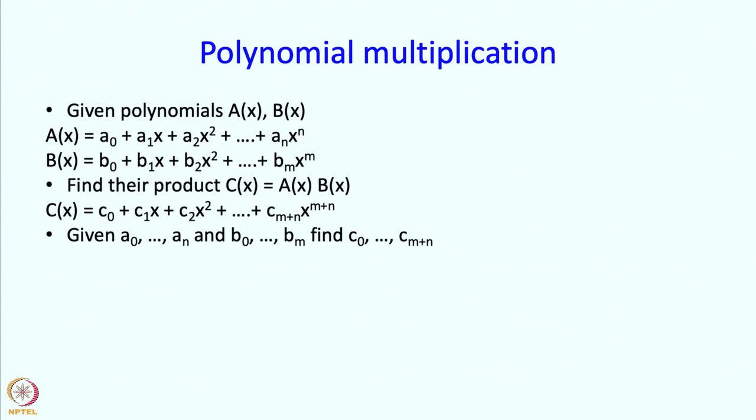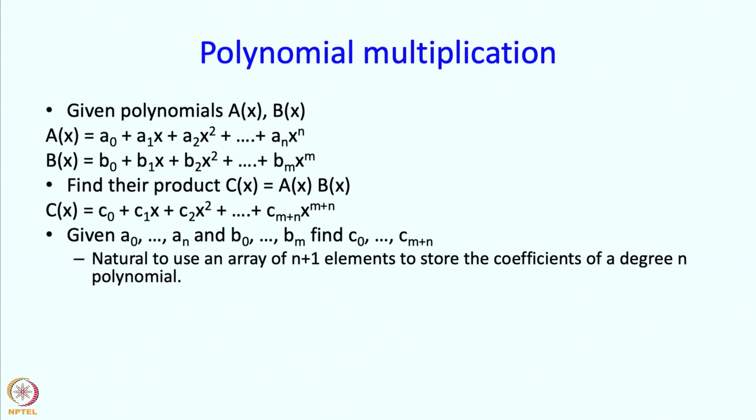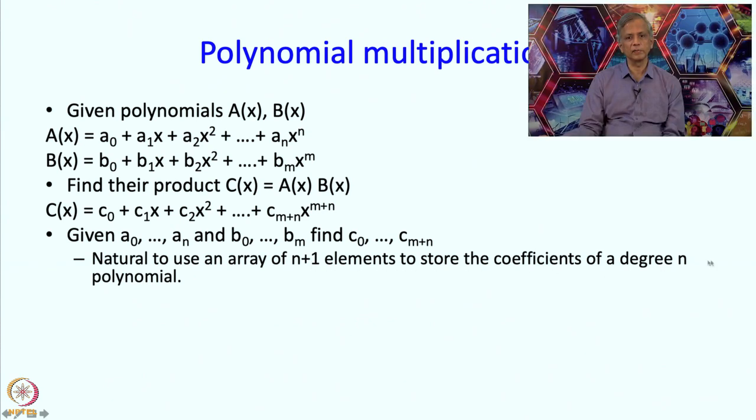So by now the answer should be obvious. We should store these numbers in an array. So it is natural to use an array of n plus 1 elements to store the coefficients of a degree n polynomial. In fact we should store A sub i in array element with index i.